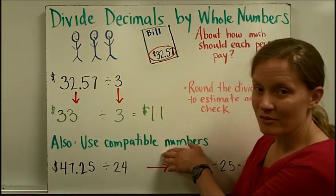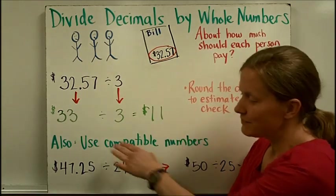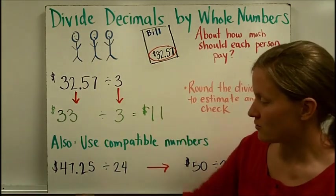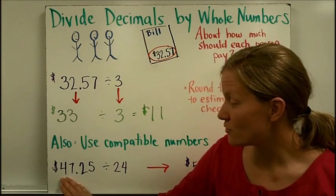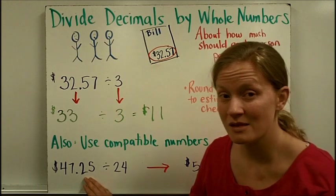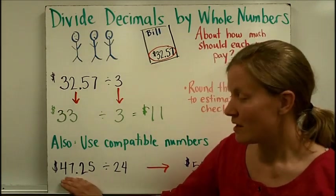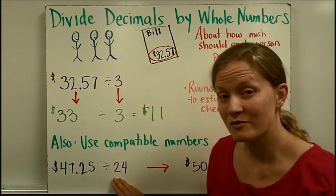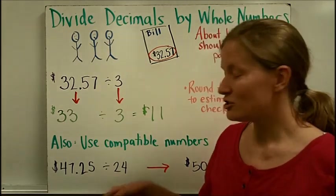You could also use compatible numbers. So our estimating strategy in this example was rounding. Compatible numbers would work as well. If, let's say that you were going on a field trip and the total cost for the field trip for the whole class was $47.25. Well, if there were 24 students in the class, if we did this math problem, the total cost divided by the number of students, that would tell the teacher how much to charge for each student. And she might think, well, how can I quickly estimate how much that is?